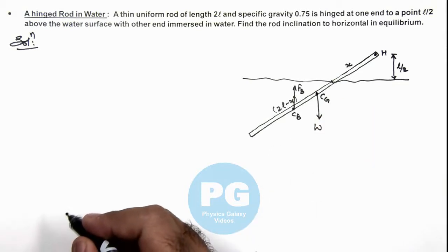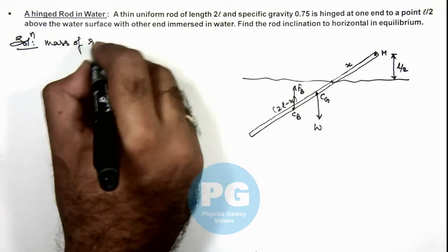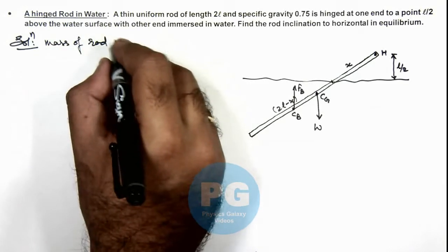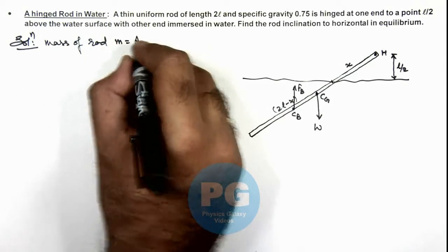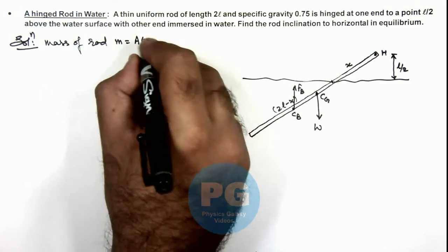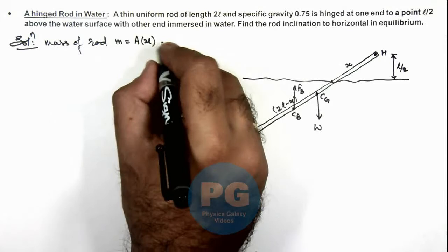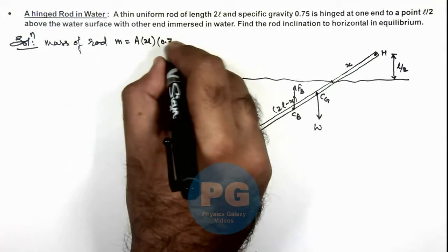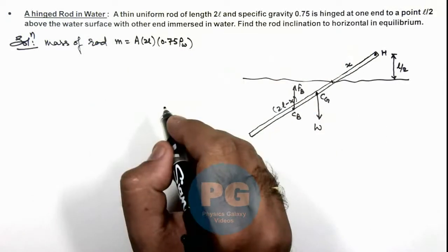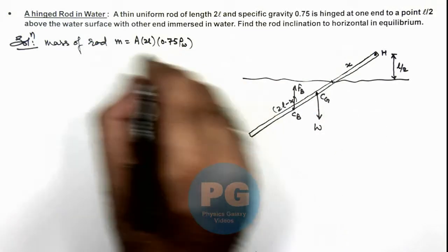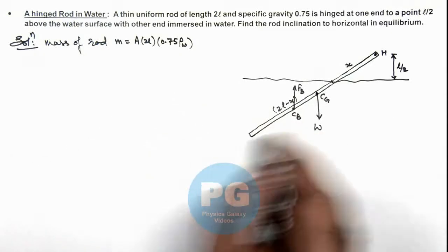So in this case we can write first the mass of rod. We can write as m equals the cross sectional area of rod, which we consider as A, times its length 2l, times its density, which we can consider as 0.75 times ρ of water as we are given its specific gravity as 0.75. So this is the mass of this whole rod.